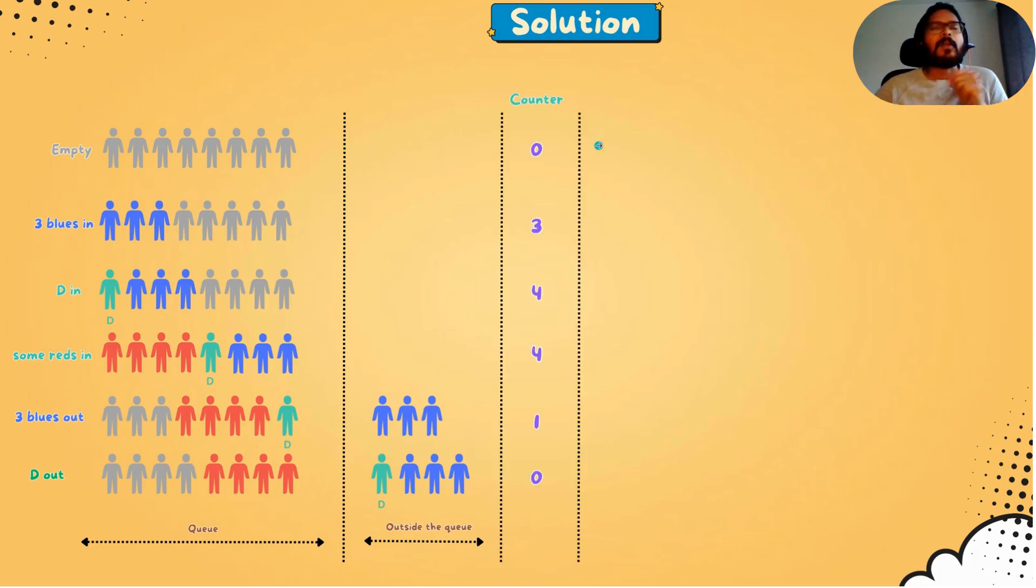This is how we could do that. Initially, there is nobody in the queue, so the special counter is zero. Three blues get into the queue, and the counter becomes three. Now Don gets into the queue, and counter becomes four. So until this point, it's simply the number of people in the queue. But from this point onwards, it changes.